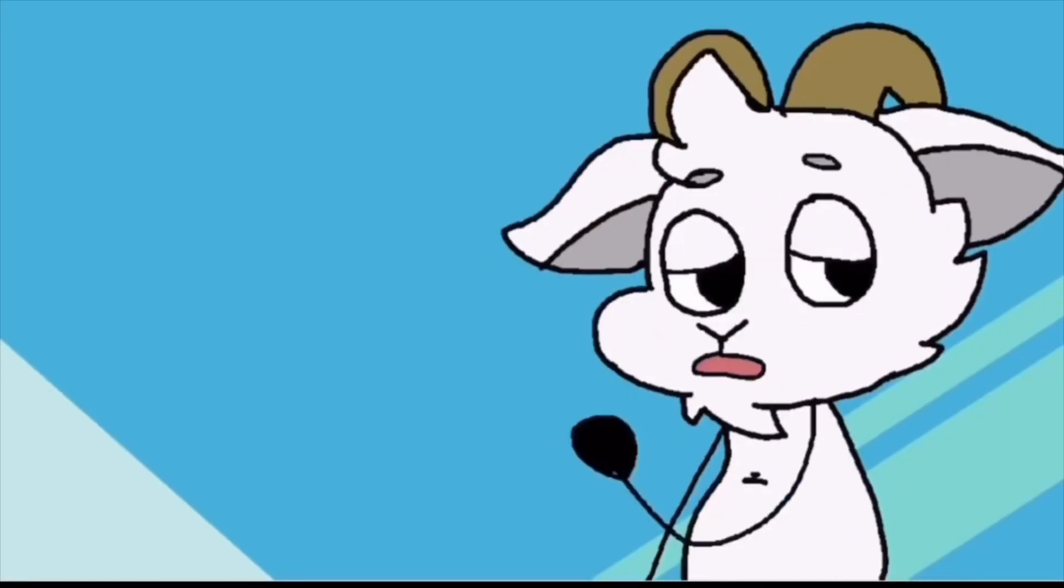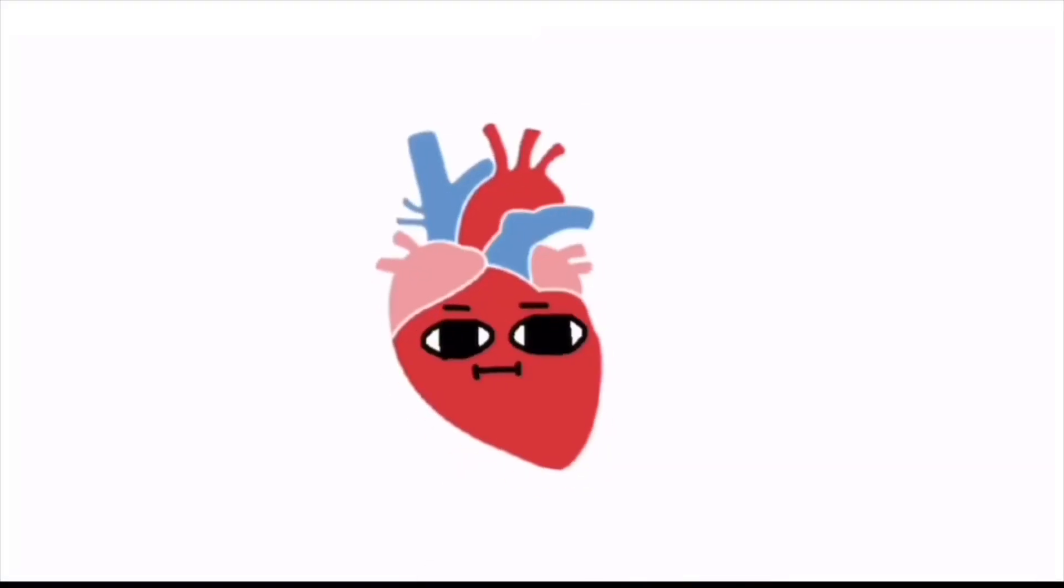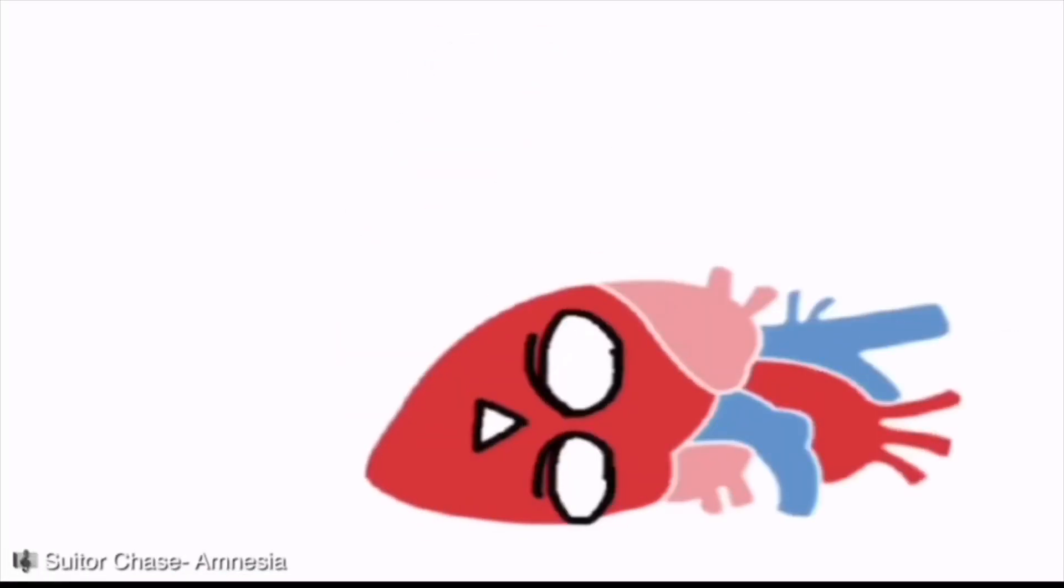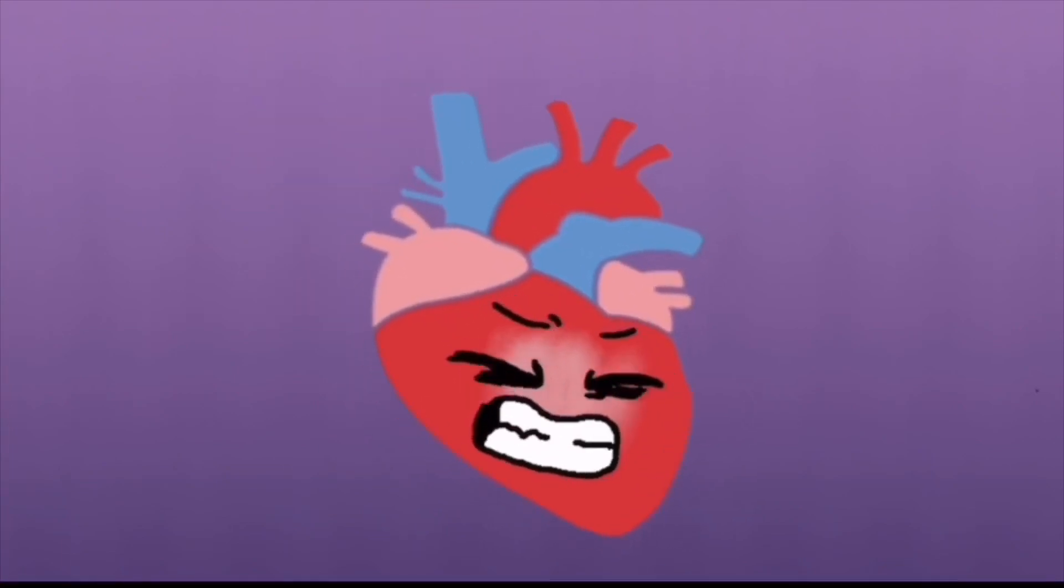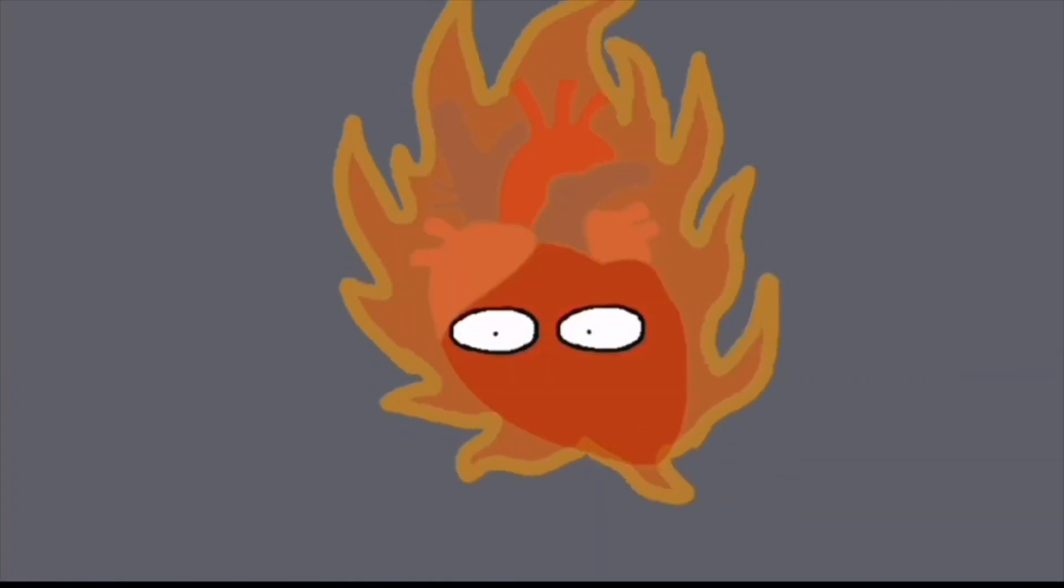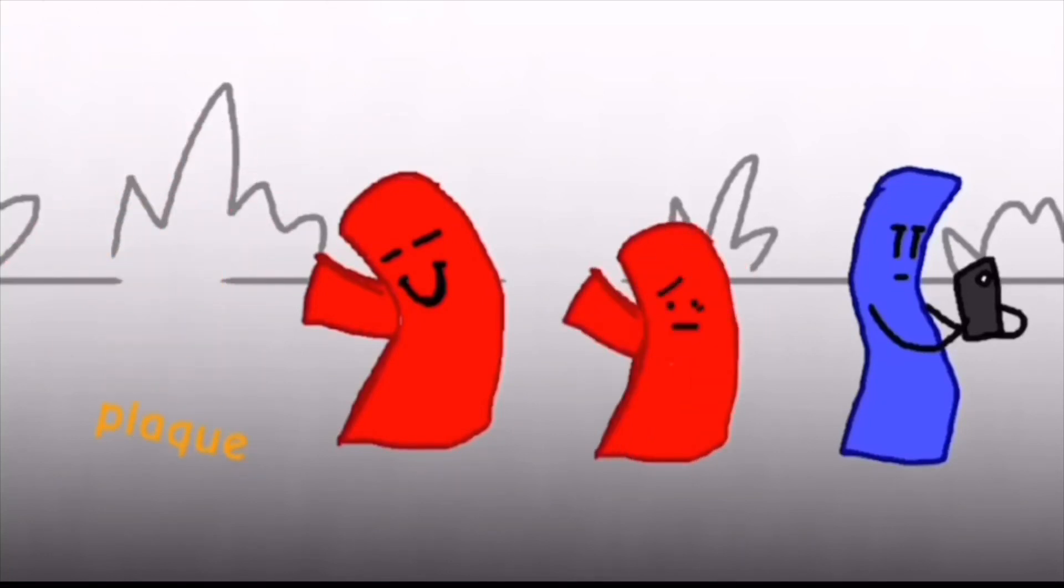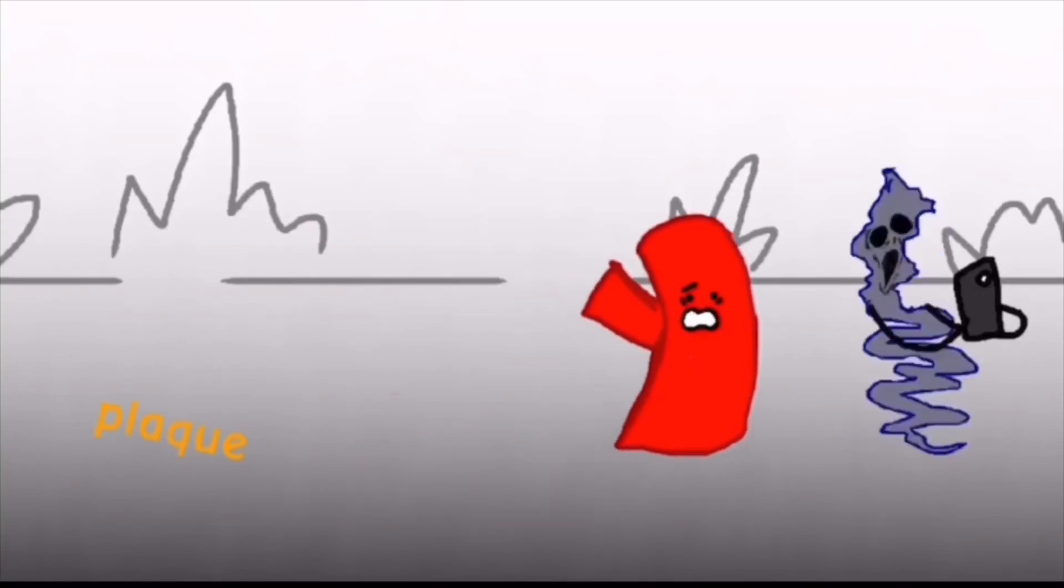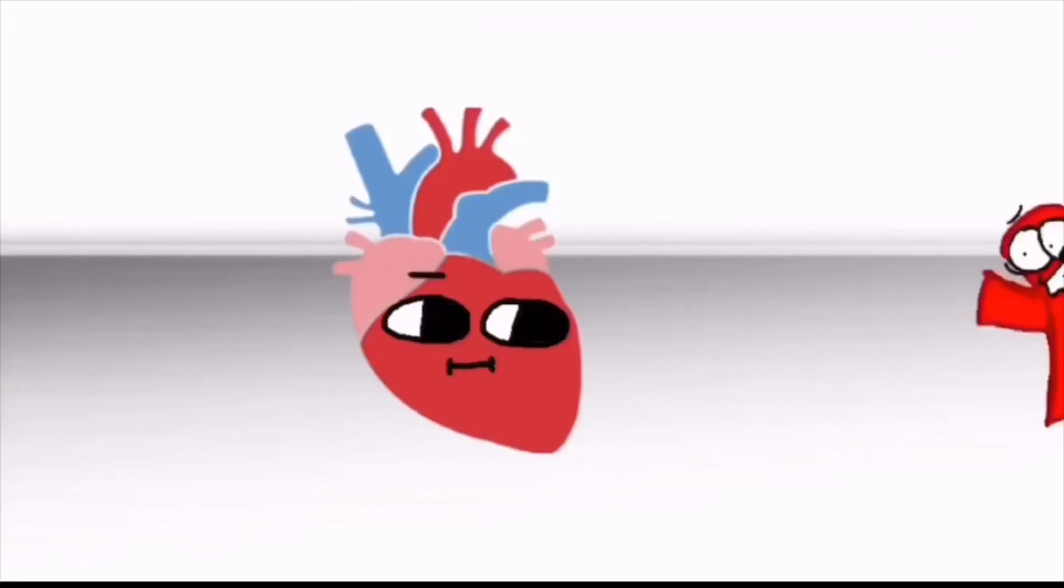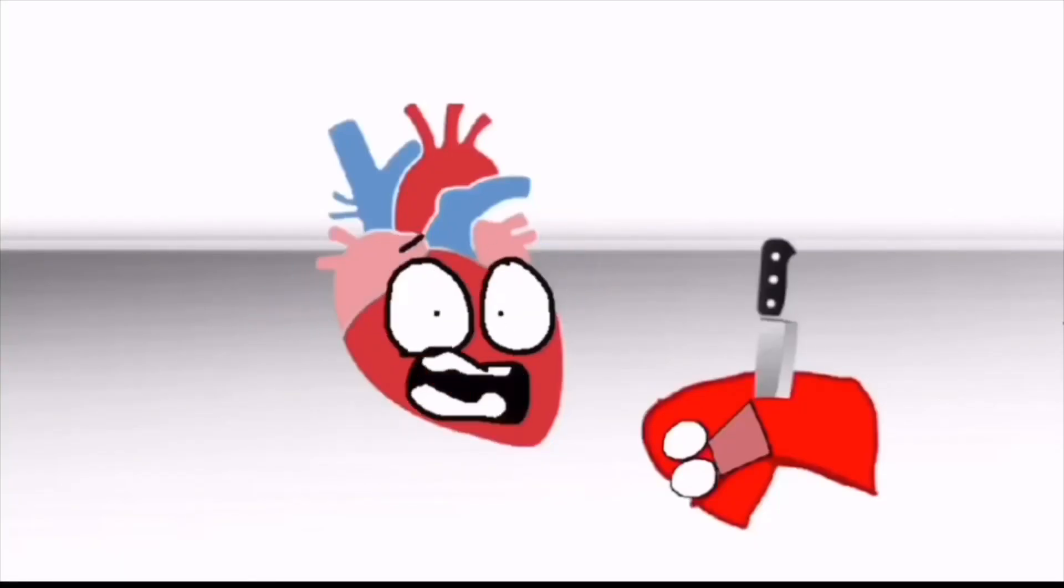However, like every other organ system, there's a disease or condition for it, and the cardiovascular system is no exception. These examples include cardiac arrest, arrhythmia, heart failure, pericarditis, coronary artery disease, aneurysm, varicose veins, stroke, and of course, heart attacks.